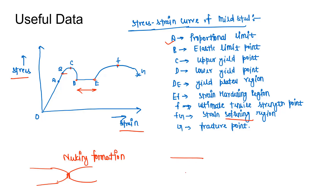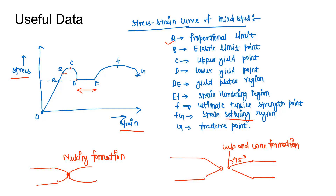At point G we see fracture. For mild steel, the fracture angle is 45 degrees, and this fracture is termed cup and cone formation. Looking at the yield plateau region D to E, we can see that stress is constant but strain is varying — meaning mild steel is not offering any resistance to deformation. So D to E is also called plastic flow.